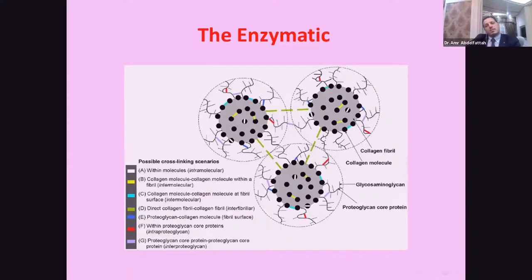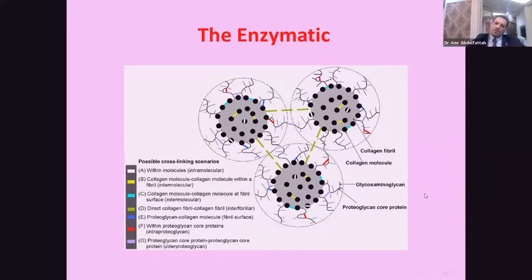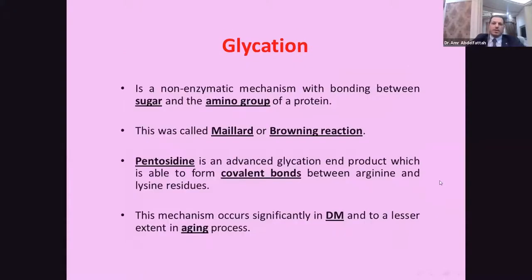As we see in this diagram, the black dots represent collagen molecules and the gray ones are collagen fibrils. There are intramolecular, intermolecular, and interfibrillar bonds. Between proteoglycans — the core proteins — we have inter-proteoglycan bonds. These bonds strengthen the collagen fiber after cross-linking.